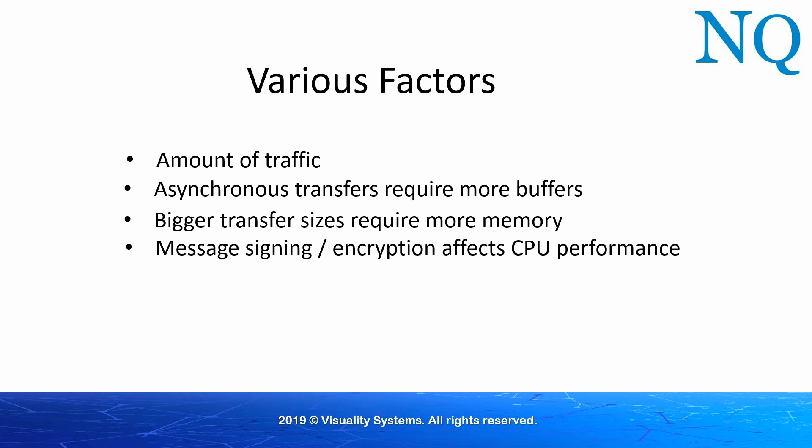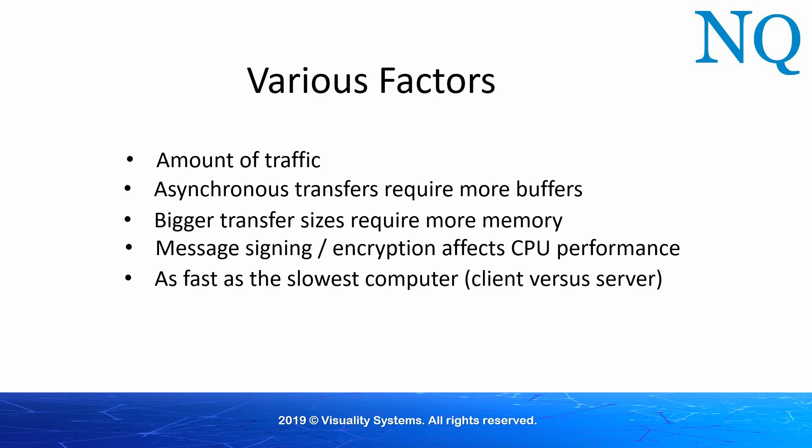Microsoft has reported that message signing reduces performance by approximately 20%. That's why enabling or disabling signing and/or encryption is always a trade-off between security and performance. And remember that you will always be limited to the speed of the slowest of the two computers — the client and the server.